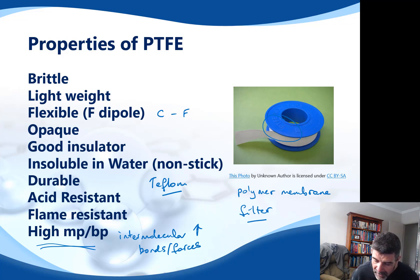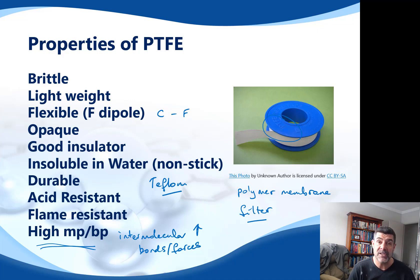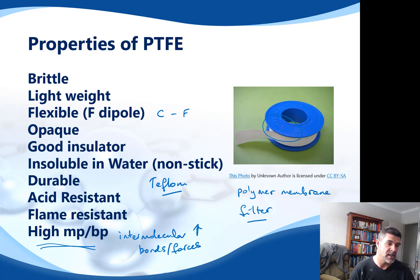Teflon is used to coat cookware to reduce sticking. It's insoluble in water so it won't wash off, and it also repels oils and things that could potentially damage the cookware, allowing that nice slippery surface which is good for cooking. It's opaque — not transparent — so unlike other polymers we've looked at, such as the polystyrene used for DVD cases or the polyethylene used for cling wrap and plastic bags, which are very transparent, PTFE does not allow light to travel through it in the same way.